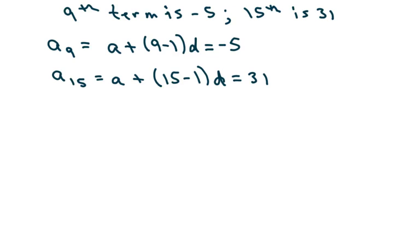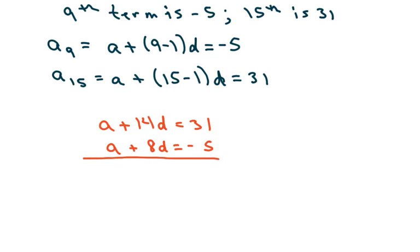So basically we have a plus 14d equals 31, and I also have a plus 8d equals negative 5. Now I'm going to use elimination and get rid of the a's — I'm going to subtract. I'll get 6d equals 36, because this is going to be 31 minus a negative 5. So d is 6.